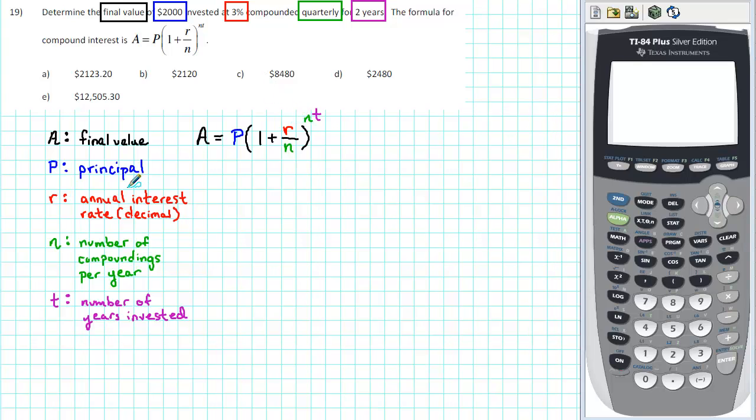The letter R represents the annual interest rate expressed as a decimal. We are given that the annual interest rate is 3%. As a decimal, that will be .03.